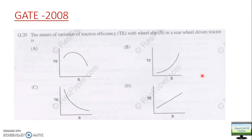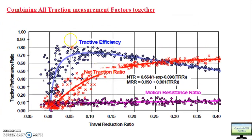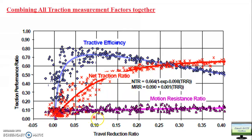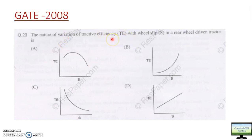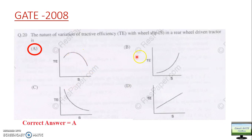In the GATE exam they asked a simple question: what is the nature of variation of tractor efficiency with slip in a rear wheel drive tractor? You should now be able to identify the answer easily. This is the tractor efficiency curve with respect to slip - it will first increase, attain a maximum peak value, and then start reducing. So the answer is option A.